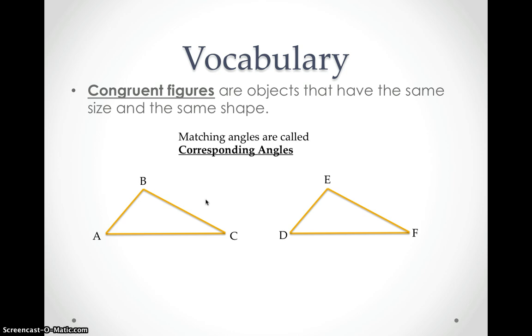Now, matching angles are called corresponding angles, and we're going to get more into this in a little bit, but just as a quick glance, angle B and angle E are matching angles. How we know that is if we took this triangle and we placed it right on top of this triangle, the two angles are going to match up. That's how we figure out what corresponding angles are.